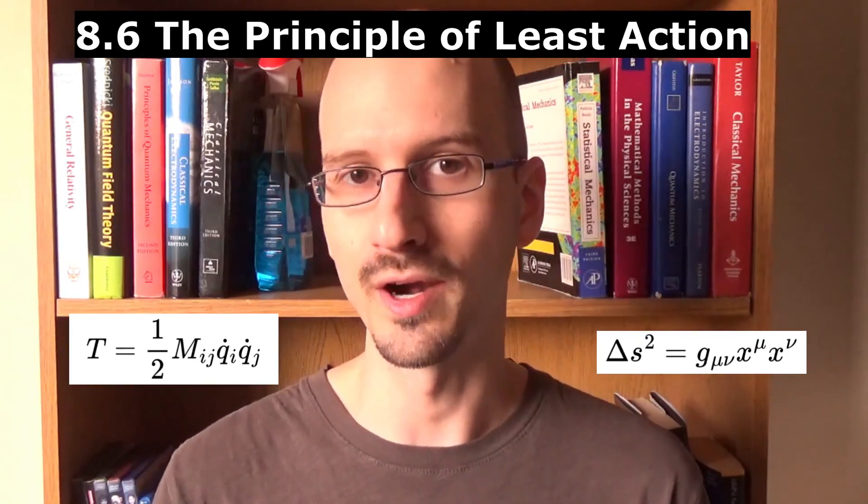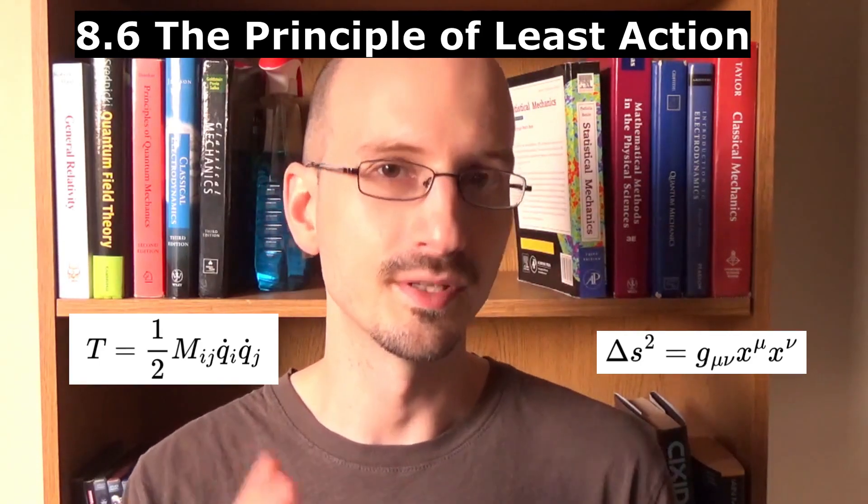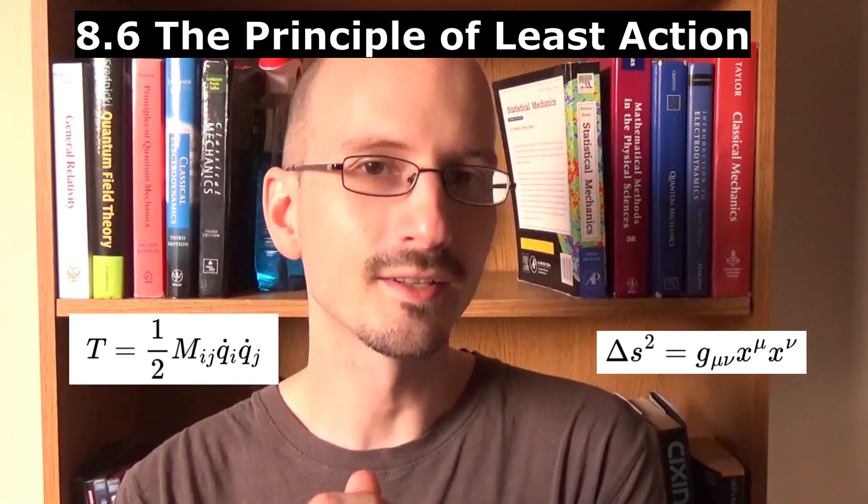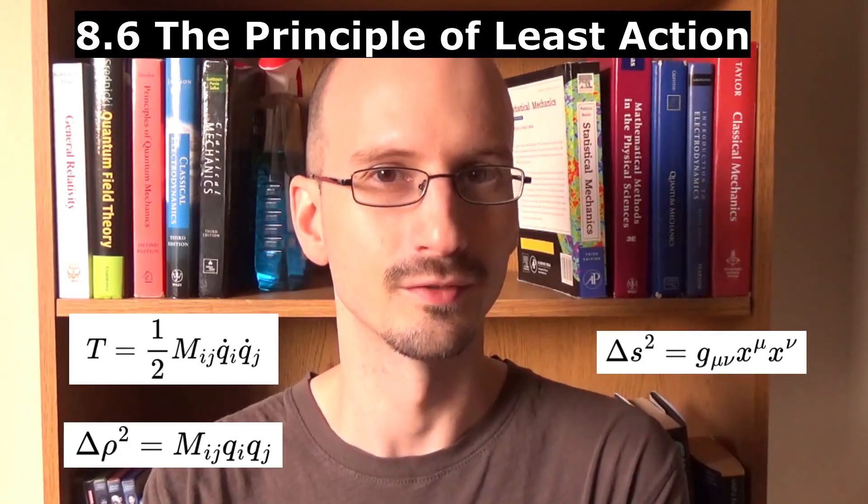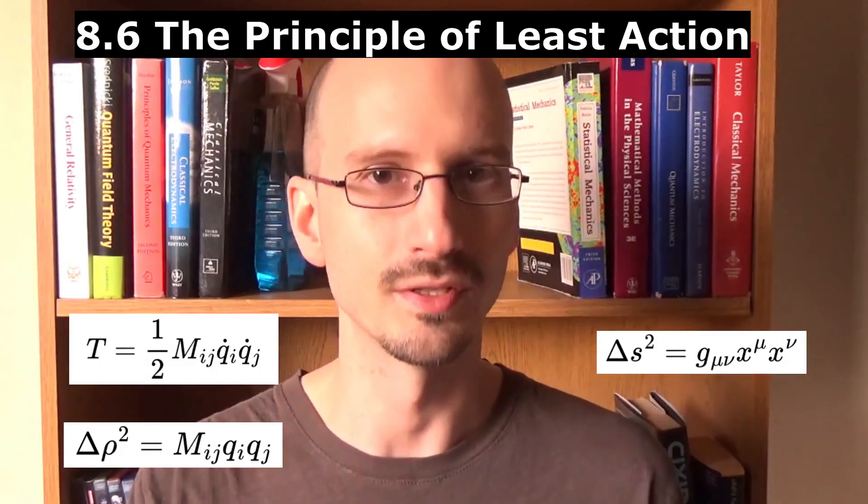the spacetime interval squared is equal to the metric tensor times the position vector twice. So we can define something similar, the phase space interval, which is the mass tensor times the position twice.